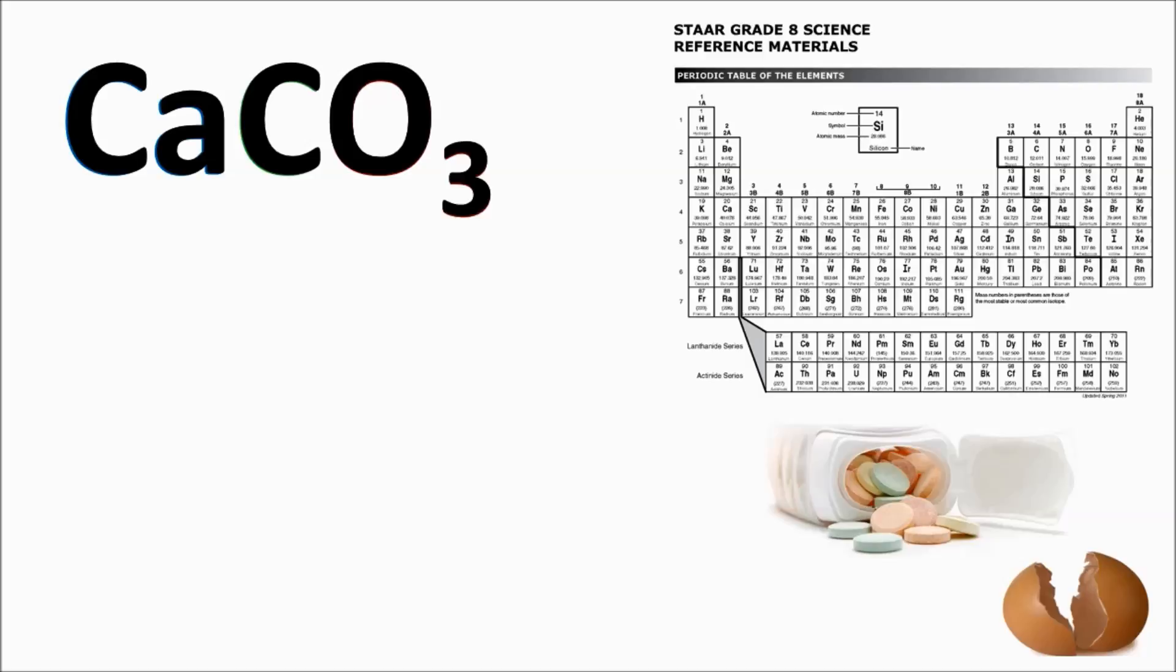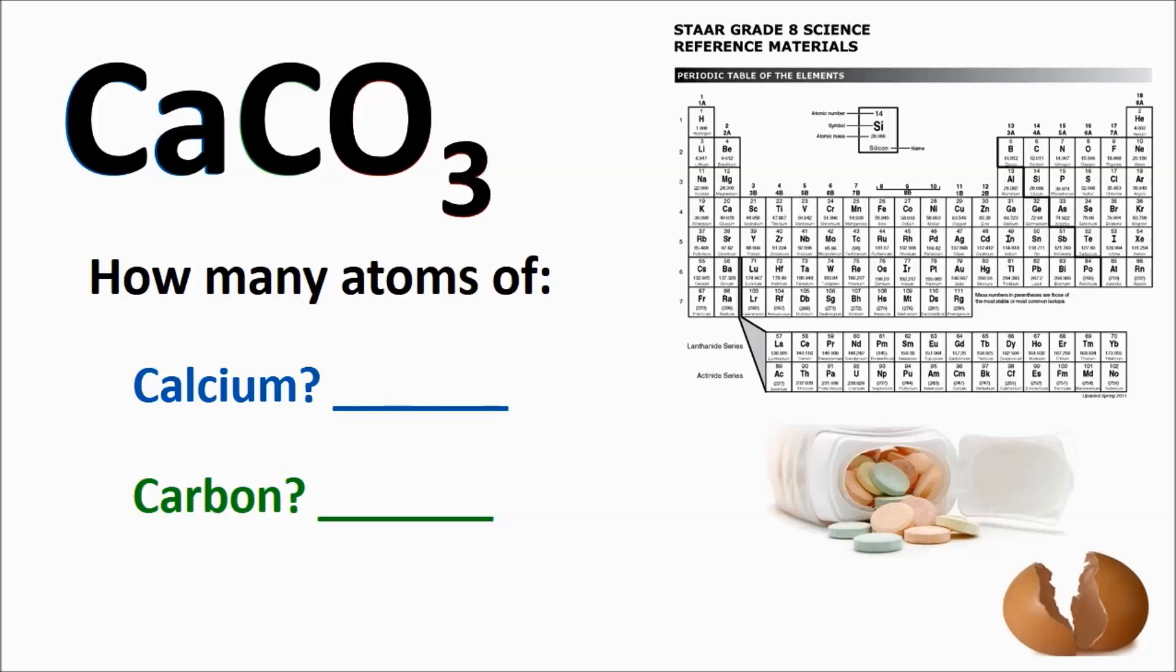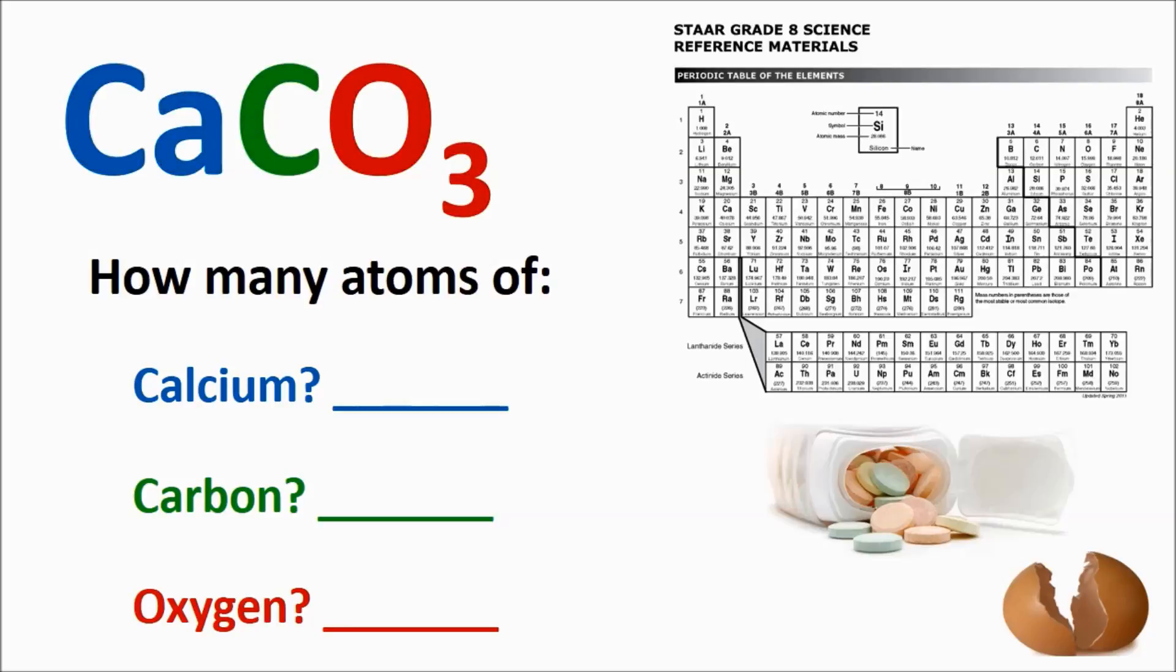Let's try another. Use your periodic table and the chemical symbols to find elements present in antacids and eggshells. How many atoms of calcium are in one molecule? How many atoms of carbon? How about atoms of oxygen? If you said 1 atom of calcium, 1 atom of carbon, and 3 atoms of oxygen, you're correct.